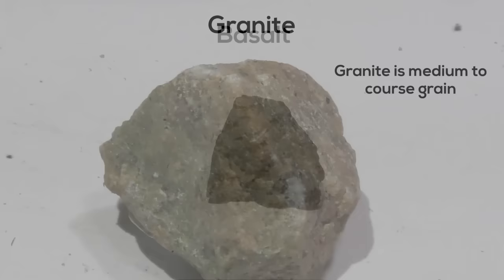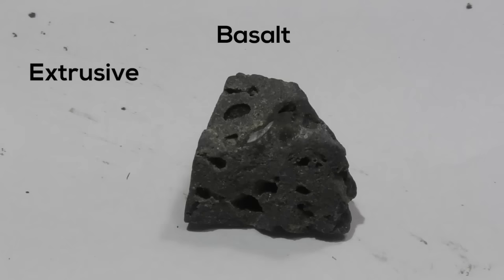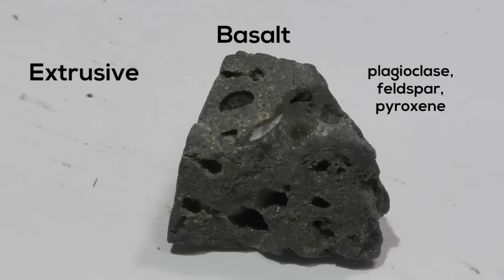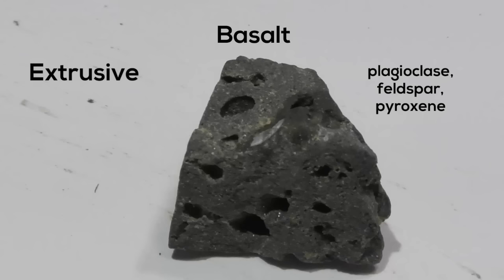Next is basalt. It's an igneous extrusive rock. It is made up of plagioclase, feldspar, and pyroxene. It is dark and dense, and is very fine grain, and has a hardness between 5 and 6.